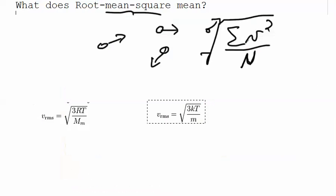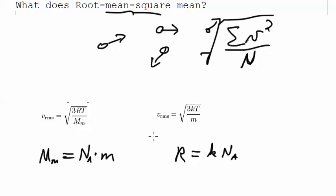I believe I can show that these two equations are exactly the same by pointing out that the molar mass, the mass of a whole mole of atoms, is equal to Avogadro's number times the mass of a single atom, or a single molecule, and also R is equal to k times N_A. So I've just plugged both of those into this one: square root of 3k N_A T over M_m is N_A m, and you can see, just crossing out the factor of N_A, gives you 3kT over little m.